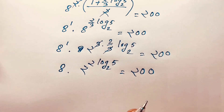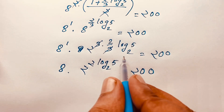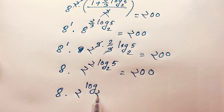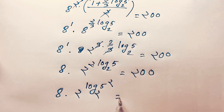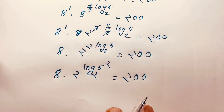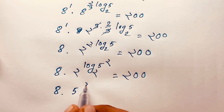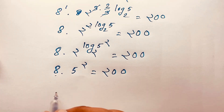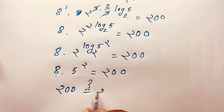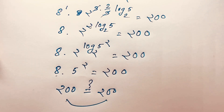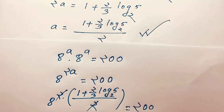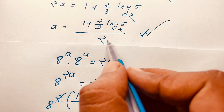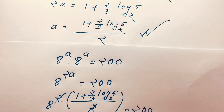The exponent moves forward, giving 8 times 2^(log₂(5²)) equals 200. Since 2^(log₂(5²)) equals 5², this becomes 8 times 25 equals 200, which is indeed 200. Left-hand side equals right-hand side, confirming our final answer: a equals [1 + (2/3)·log₂5] / 2.